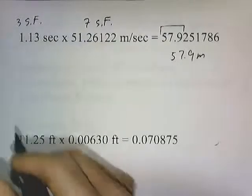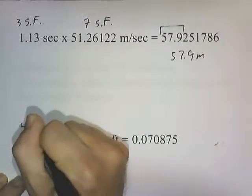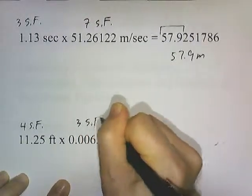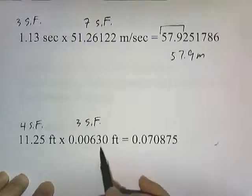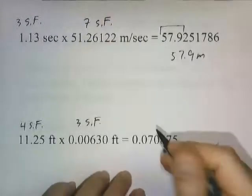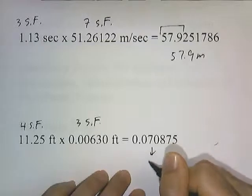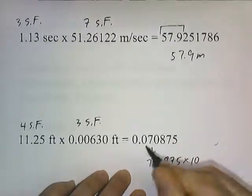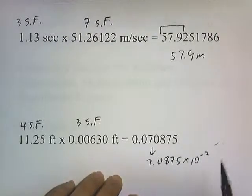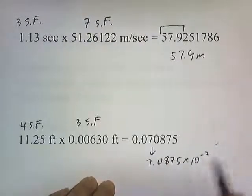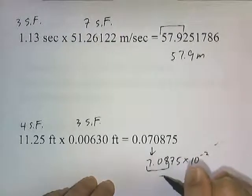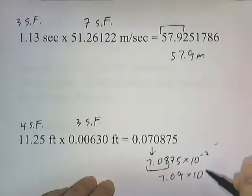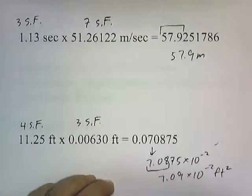In our final example, one number has four significant figures and the other has three. Multiplying these two numbers gives a result on the calculator. Converting to scientific notation: 7.0875 times 10 to the negative 2. Since we can only have three significant figures, this rounds to 7.09 times 10 to the negative 2 square feet.